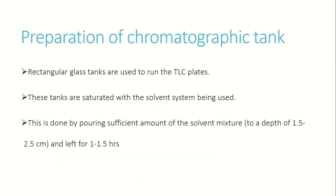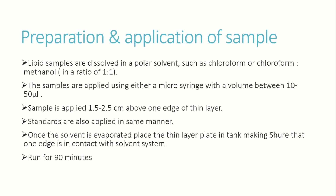For preparation of the chromatographic tank, use a rectangular chromatographic tank with the solvent system at a height of 1.5 to 2.5 cm for saturation. The solvent vapor saturates and equilibrates the tank for proper separation. Lipid samples are dissolved in polar solvents such as chloroform or chloroform:methanol in a 1:1 ratio. Samples and standard mixtures are applied using a microsyringe.